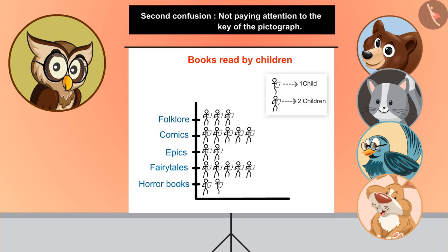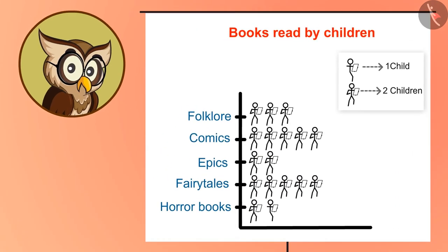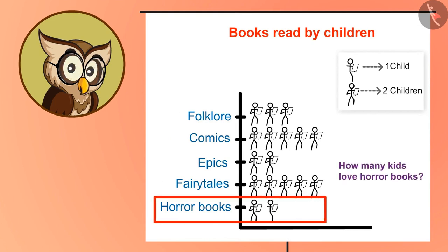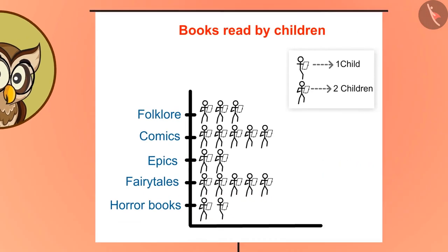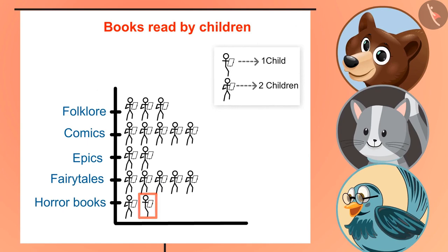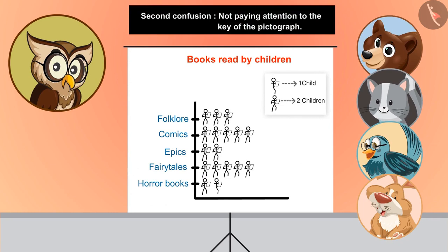By making such keys, we can easily show data with fewer pictures in the pictograph. Now, take a look at the pictograph again — how many kids love horror books? Here we have only half a stick man. If a whole stick man means 2 children, then half a stick man means 1 child. So how many children love horror books? 3.